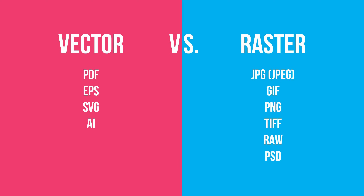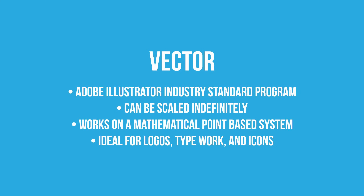The first thing to consider is vector versus raster. Vector file formats include PDF, EPS, SVG, and AI. Raster formats include JPEG, GIF, PNG, TIFF, RAW, and PSD. A vector file works on a mathematical point system, so instead of using pixels like a raster file, vectors can be scaled indefinitely because they consider points and the paths between those points.